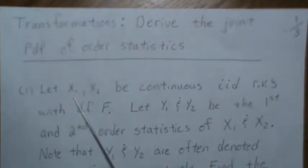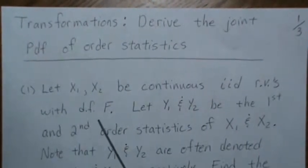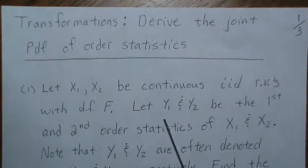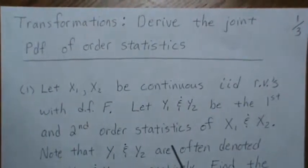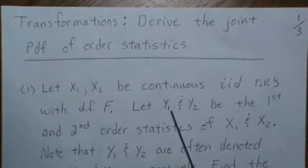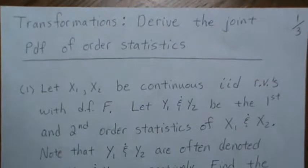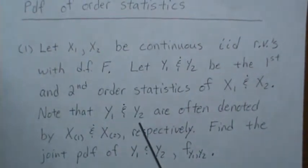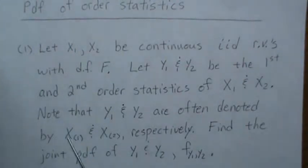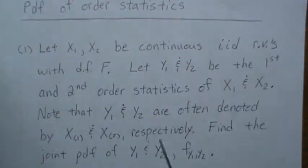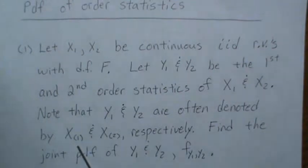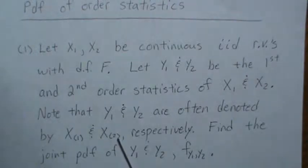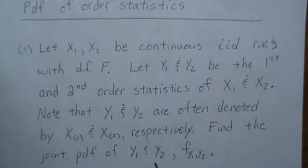Let x1 and x2 be continuous IID random variables with some density function f. We're going to let y1 and y2 be the first and second order statistics of this sample — that means y1 is the smallest of the two and y2 is the largest. It should be noted that these are often denoted x(1) and x(2), where x(1) is the first order statistic (the smallest) and x(2) is the second order statistic, which in our case of n=2 is also the maximum. We want to find the joint PDF of y1 and y2.